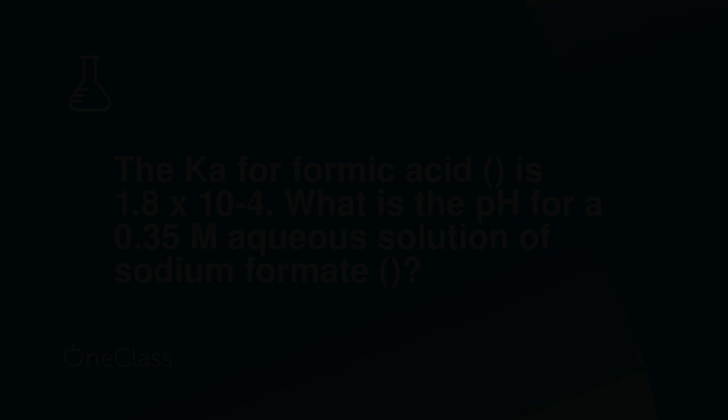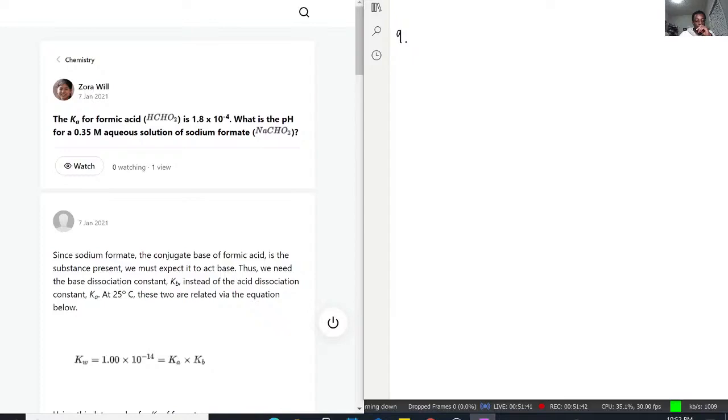For question 9 we have the Ka for formic acid is 1.8 times 10 to negative 4. What is the pH for 0.35 moles of an aqueous solution of sodium formate? This is going to involve quite a bit of steps. The first thing we want to do is write out the information.